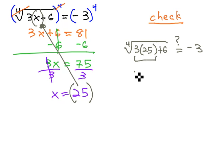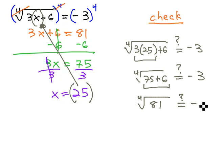3 times 25 is 75, and so we have the fourth root of 75 plus 6. 75 plus 6, that's going to be 81. And the fourth root of 81 is 3. Is that equal to negative 3? It is not equal to negative 3.